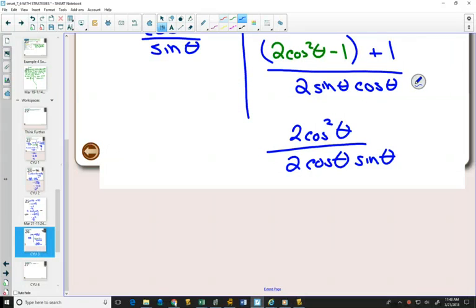At this point you might be able to see, hey, this is all multiplying—I can simplify my twos, and I have another common factor. I have a cos² on the top and one cos on the bottom. That means one of these cos is going to cancel out with that cos on the bottom. So what am I left with? I'm left with cos θ over sin θ, which is exactly what I had on the left side.